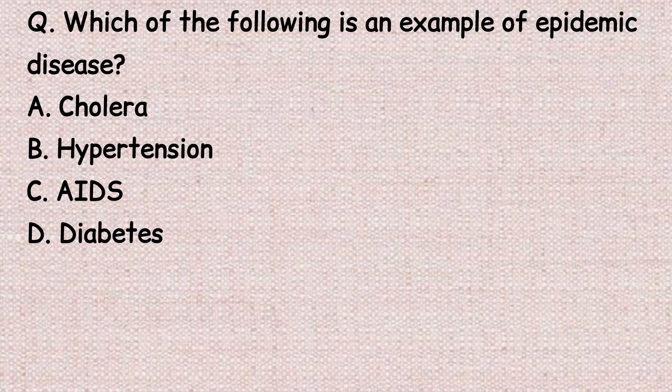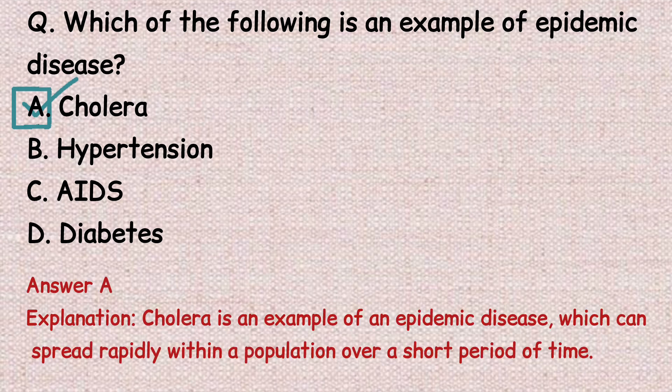The next question: which of the following is an example of an epidemic disease? Option A: cholera. Option B: hypertension. Option C: AIDS. Option D: diabetes. The correct answer is option A, cholera. Cholera is an example of an epidemic disease, which can spread rapidly within a population over a short period of time.